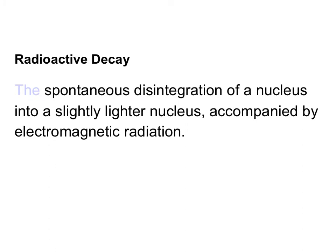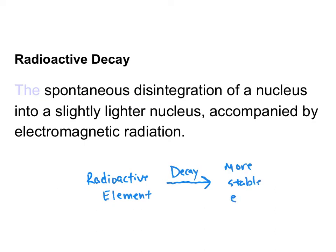So first of all, what is radioactive decay? Radioactive decay is the spontaneous disintegration of a nucleus into a slightly lighter nucleus, accompanied by electromagnetic radiation. We have a radioactive element that undergoes decay and becomes a more stable element, because things don't like being radioactive — they decay until they become stable. Then some kind of electromagnetic radiation gets released into space.